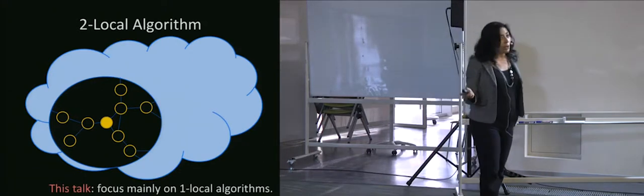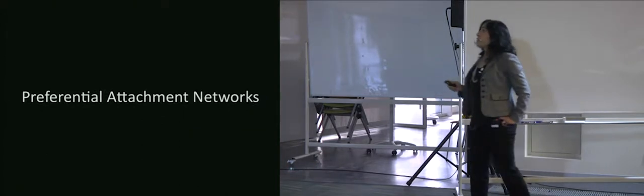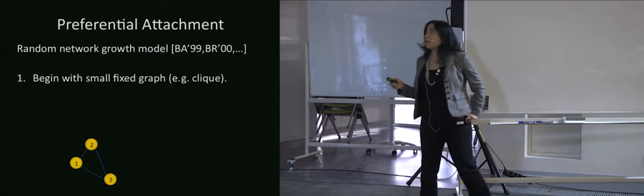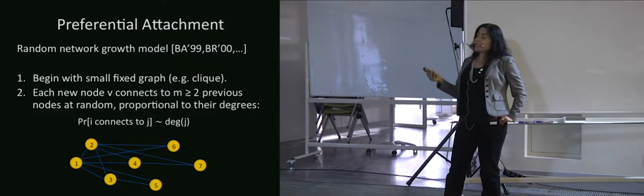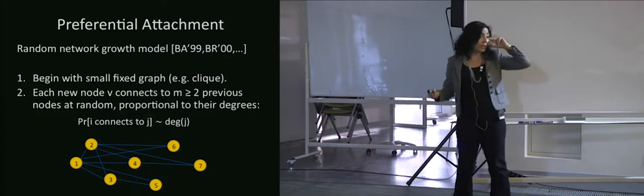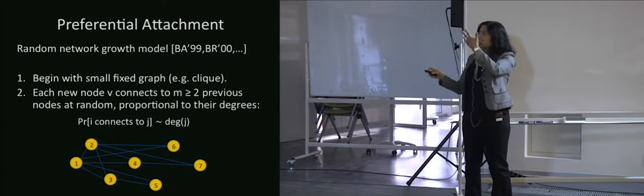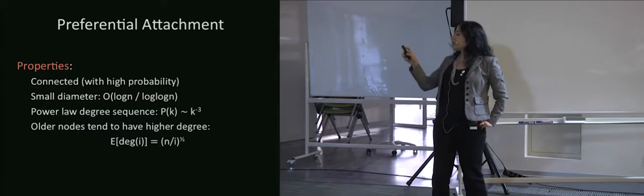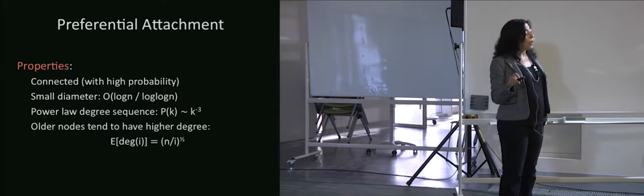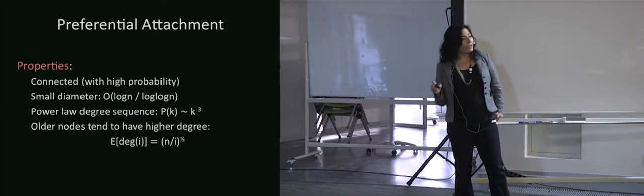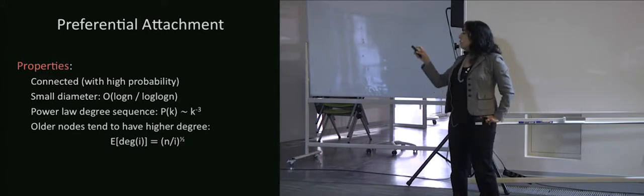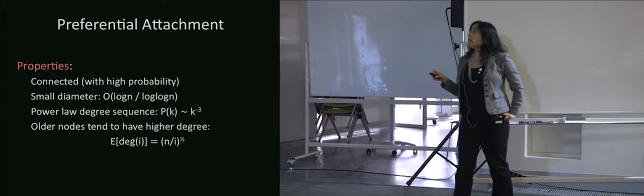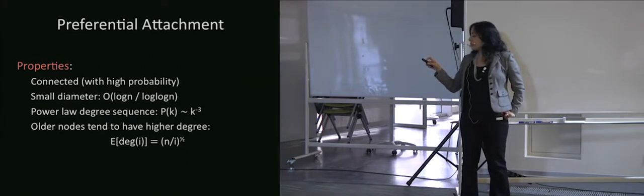In this talk I'll focus mainly on one-local. Preferential attachment networks: I begin with a small fixed graph; every time a fixed number — say two — more edges are sent out proportional to the existing degree of the nodes. With high probability it's connected and has a small diameter of log n over log log n (Bollobás and Riordan proved that around 2000). Power-law degree sequence — the probability that I have k neighbors goes like one over k cubed. Older nodes tend to have higher degrees. What I really care about here is the small diameter.